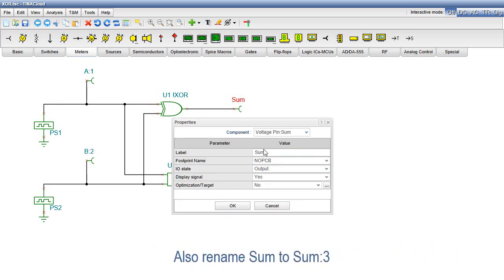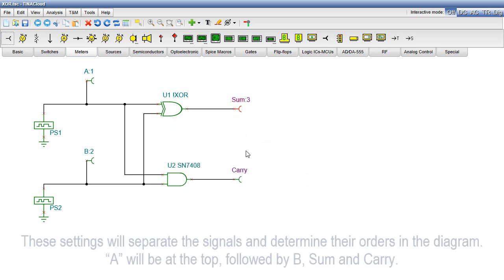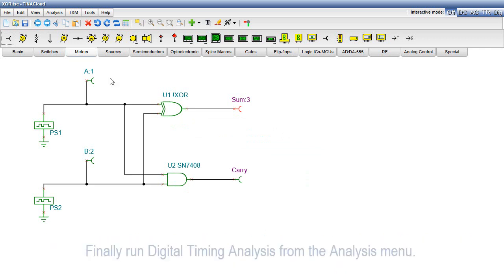Also, rename SUM to SUM colon 3. These settings will separate the signals and determine their orders in the diagram. A will be at the top, followed by B, SUM, and carry.